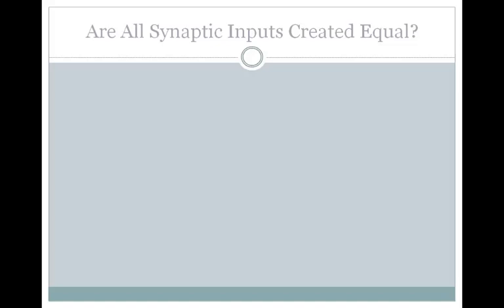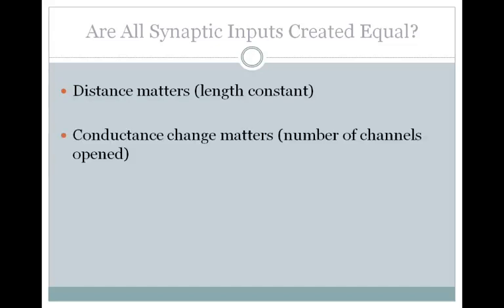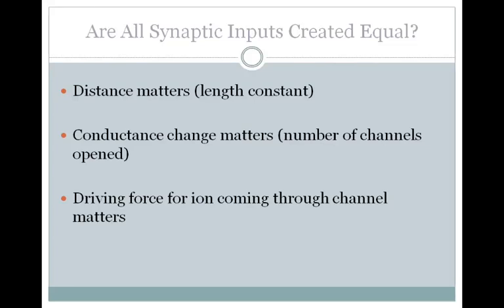Are all synaptic inputs created equal? The answer is no. Distance matters — the further a synapse is from the axon hillock, the more the current will decay before reaching it. The conductance change also matters: the number of ion channels that are open determines the voltage change, so some synapses cause greater voltage changes than others. Similarly, the driving force for the ion coming through a channel matters — the greater the driving force, the greater the amount of current that will flow.